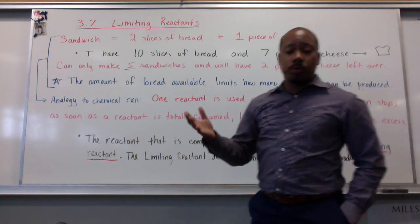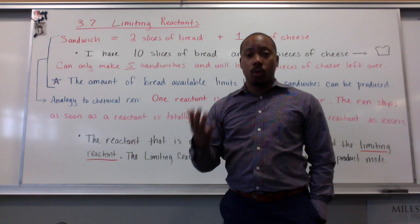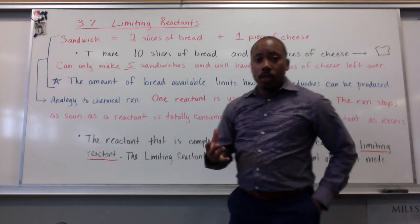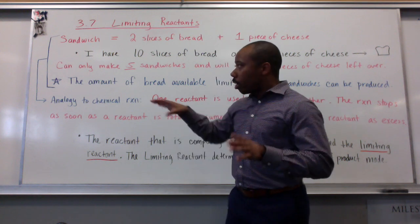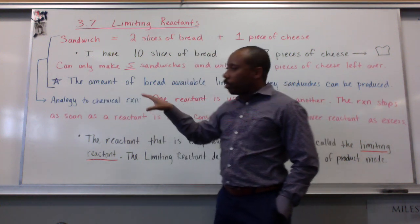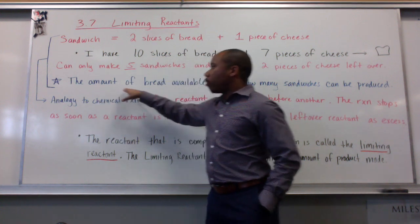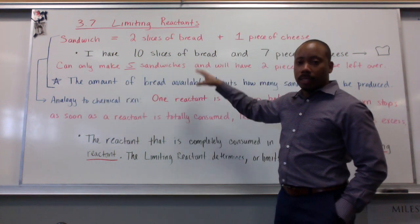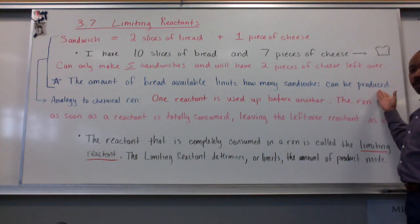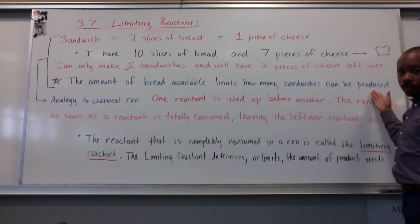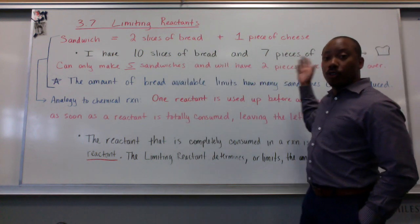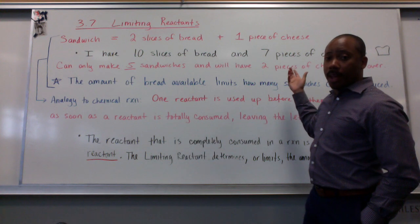This is analogous with how chemical reactions work in terms of the reactants that are involved. Now, thus far, we've talked about different reactants, but let's go back to my analogy really quick. The amount of bread available, that ten slices, limited how many total sandwiches I could make, that I could produce. Because once I ran out of bread, I had cheese left over and I could make no more sandwiches without more bread.